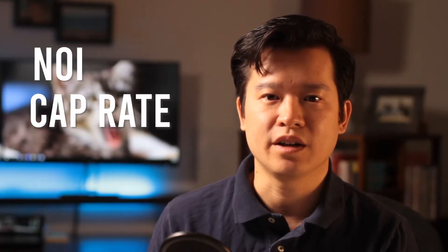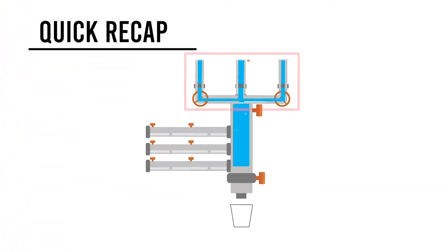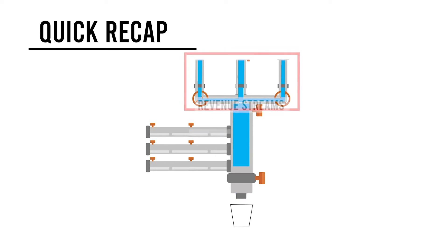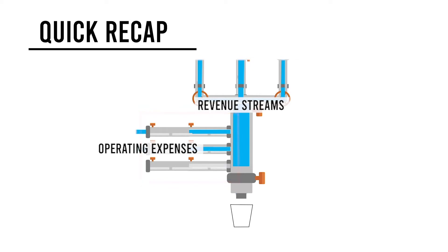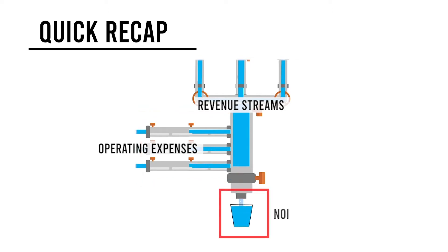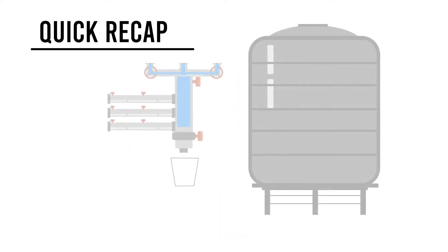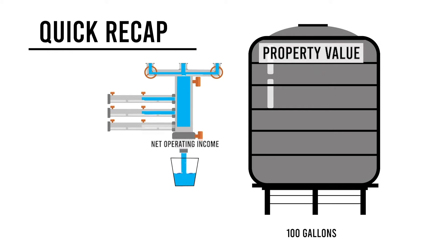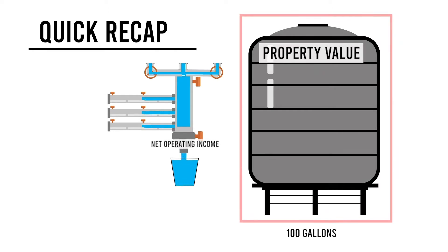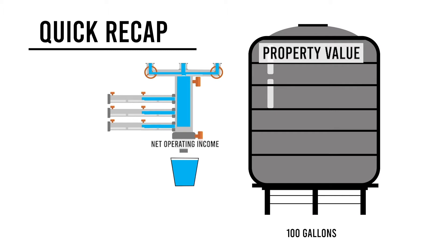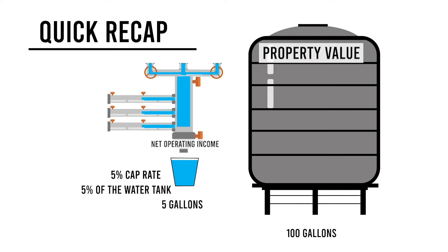Previously, we went over the relationship between NOI, cap rate, and property valuation by using a pipe and water tank analogy. Let's recap. A property generates revenue streams, but there are associated costs called operating expenses. What's left flows through to you, the owner, and is called NOI. When you buy a stable property, it comes with the ability to generate predictable NOI. That NOI is a small percentage of the price you pay for the property, and the percentage rate is called the cap rate.